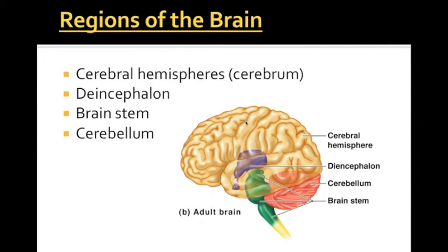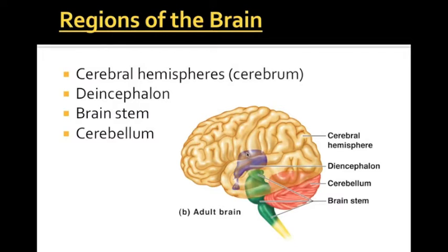The grooves that sink down are called the sulci — S-U-L-C-I. So the sulci sink, and the ridges are called the gyri. There are also divisions within the brain formed by other grooves, and these are called fissures.